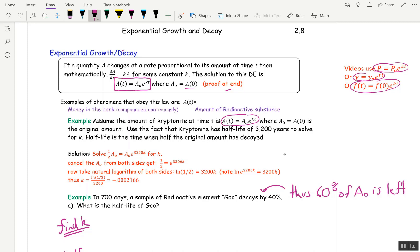Half-life is the time it takes for half of A₀ to go away. And so what we're doing is we're solving this equation. One half of A₀ is A(t), and that's equal to A₀e^(3200k). You solve that for k. So cancel the A₀s. You need them there originally, but you can cancel them then. And then take natural log of both sides of what's left, and you'll get this.